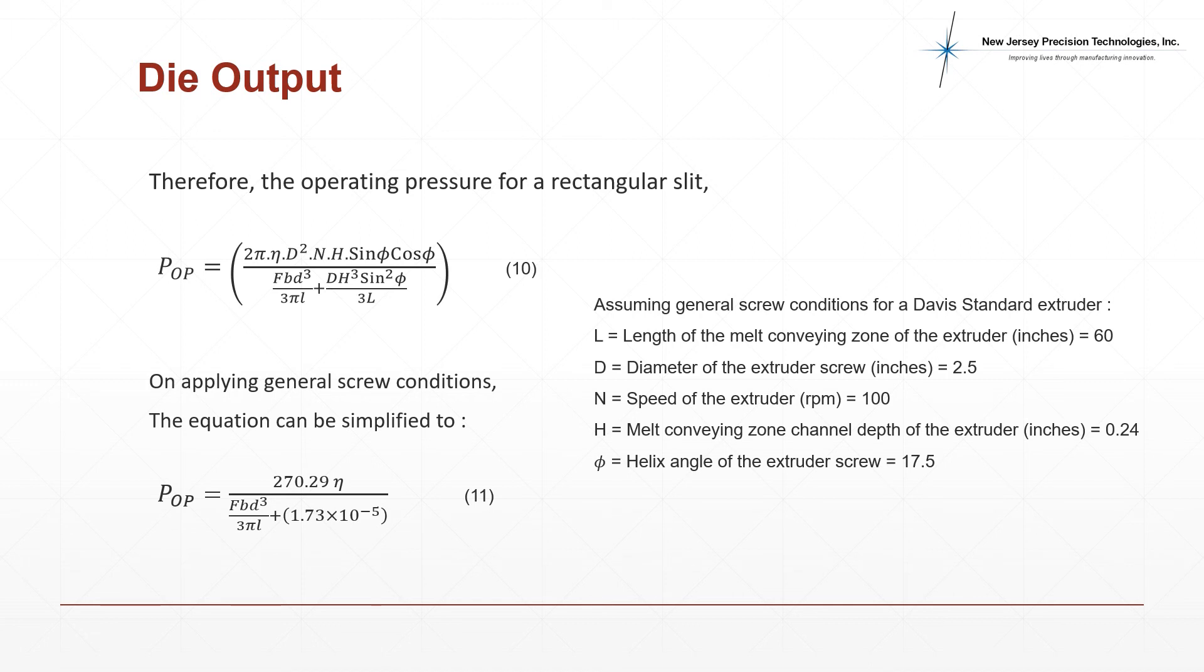We can derive the formula to determine the operating inlet pressure required for the die to attain operating throughput. After applying the general conditions for the Davis standard extruder, we can derive equation 10 into equation 11.